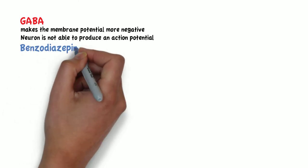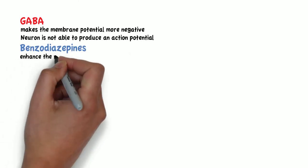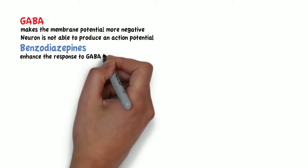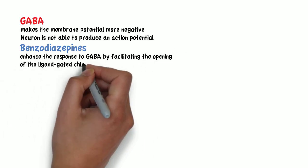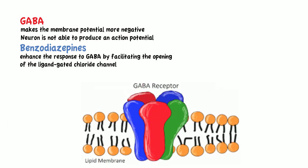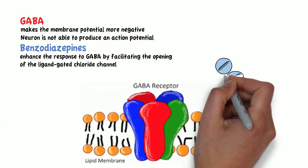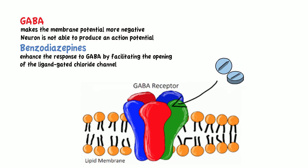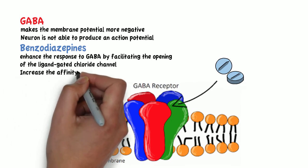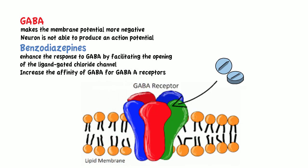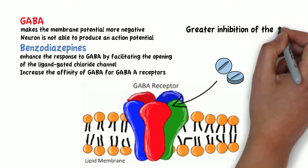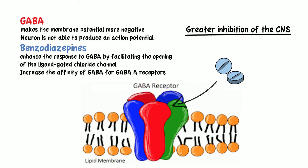Benzodiazepines, in turn, will enhance the response to GABA by facilitating the opening of the ligand-gated chloride channel. They bind to an accessory site known as the benzodiazepine receptor and increase the affinity of GABA for its receptor, therefore leading to a greater inhibition of the central nervous system.